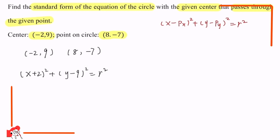How can we find r²? We substitute the point on the circle into the equation. So we get: (8 + 2)² + (−7 − 9)² = r², which gives us 10² + (−16)² = r², so r² = 100 + 256 = 356.